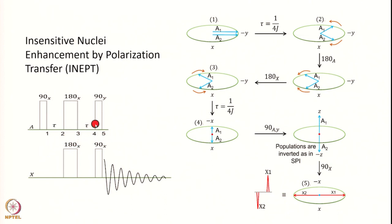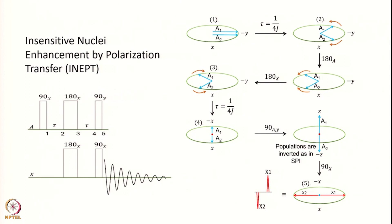Then you wait for the same time tau again, then apply a hard 90-degree pulse along the Y axis to the A spin and a 90X pulse to the X spin. More importantly, if the first pulse is X, this one has to be Y. With this pulse sequence, you will get a substantial enhancement of the X magnetization, which is what you detect.